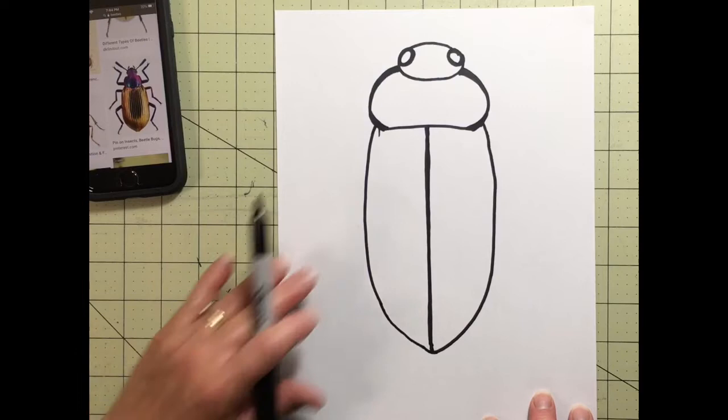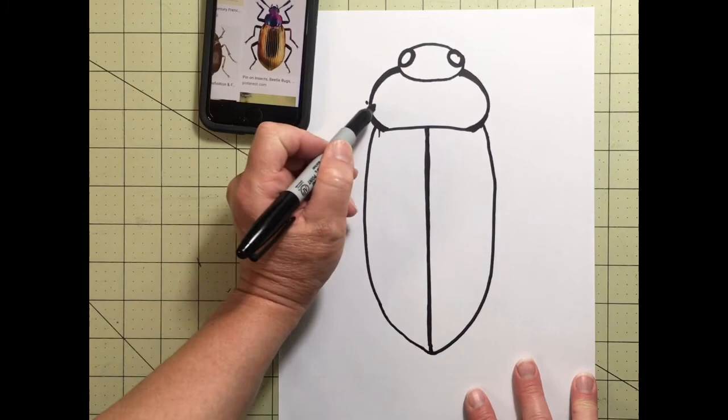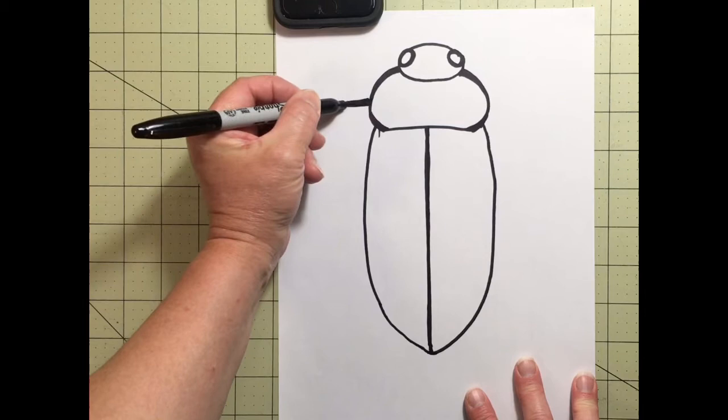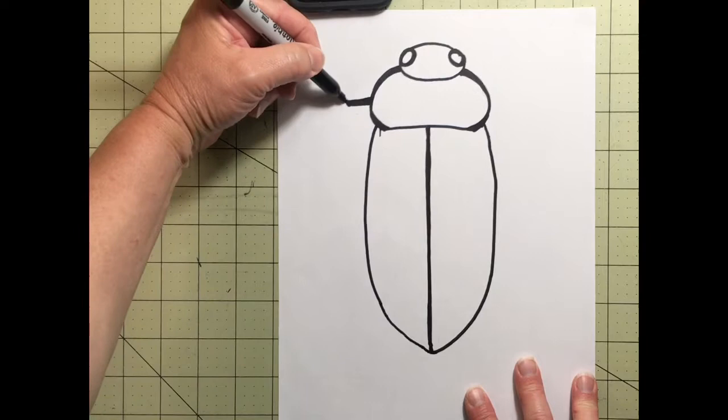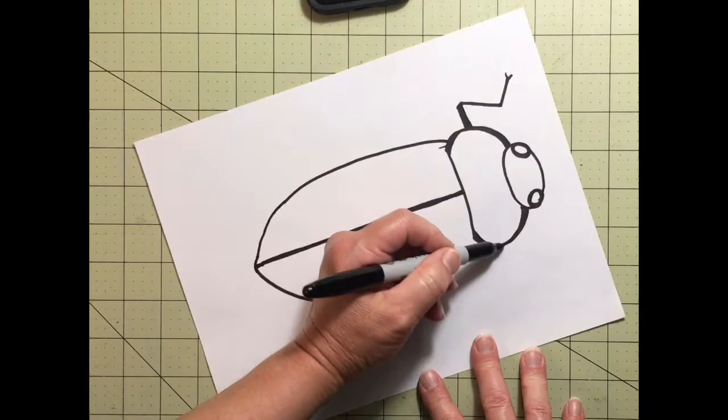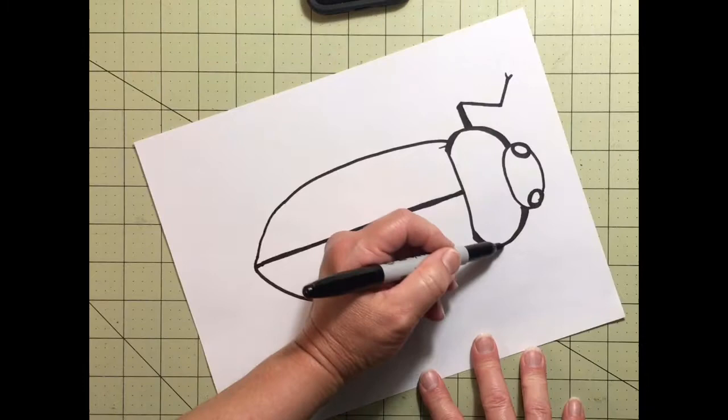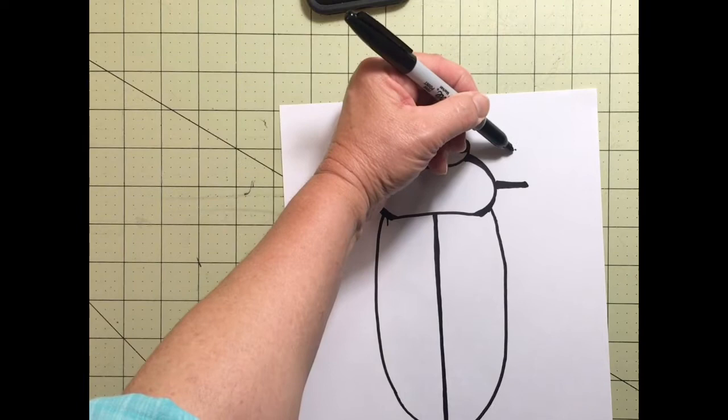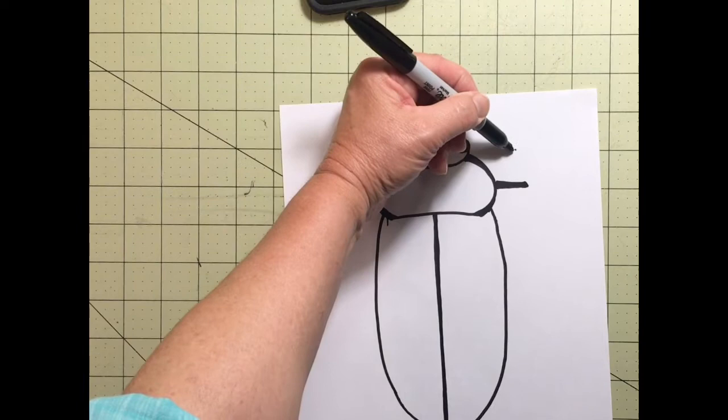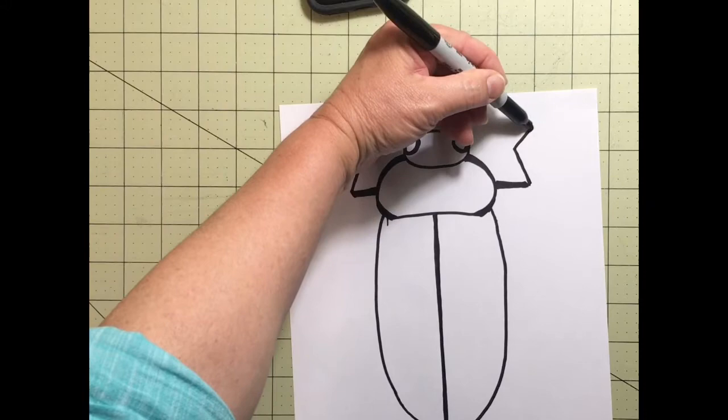Now he needs legs. This particular one has legs that come out about right here that go out, and then up, and then out again. Now I want to do the same thing over here. It goes out, and then up, and then out again. Something like that.